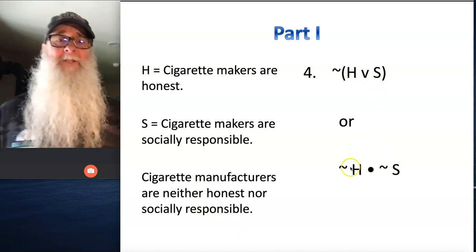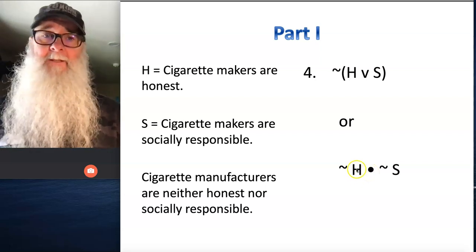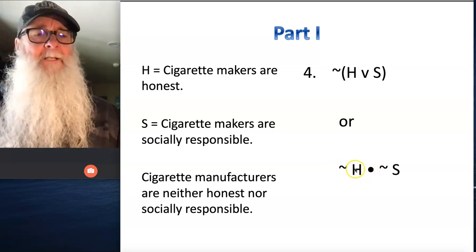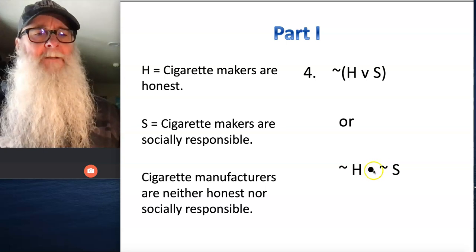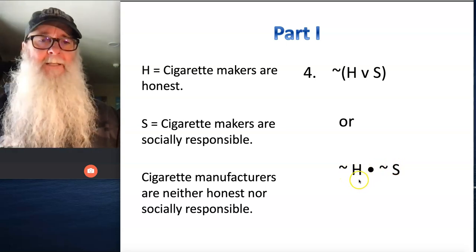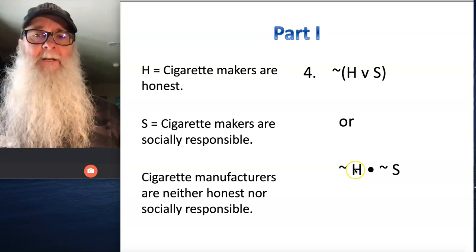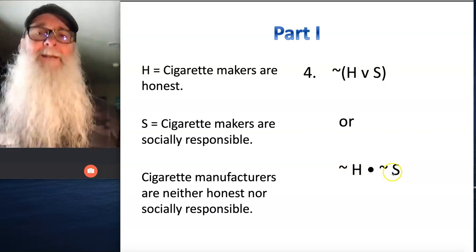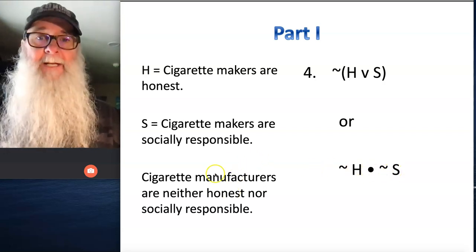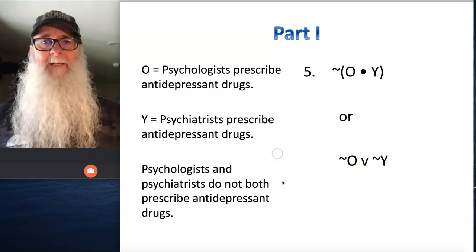The other way we could translate this is using a dot. And if we chose to translate this with a dot, we'd write it as tilde H dot tilde S. And this statement reads as follows: it is not the case that cigarette makers are honest, and it's not the case that cigarette makers are socially responsible. They're neither, and that's exactly what the original says.